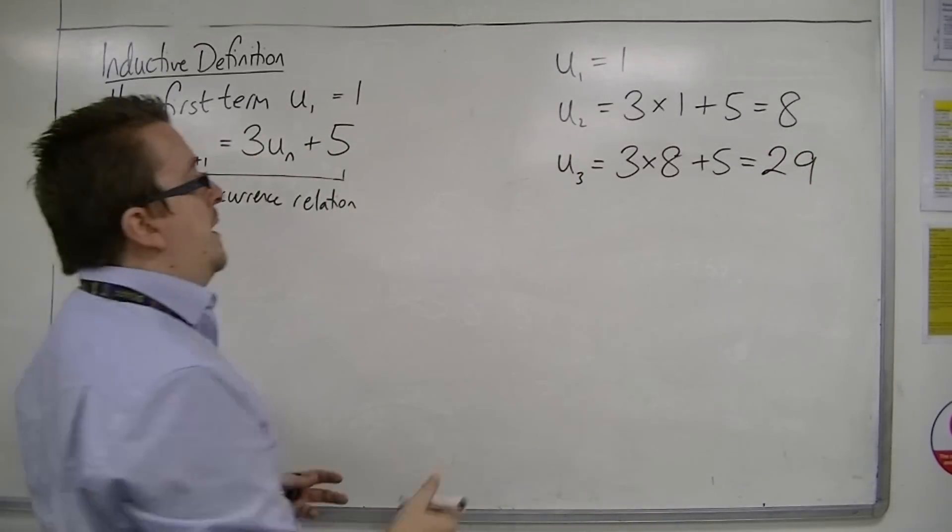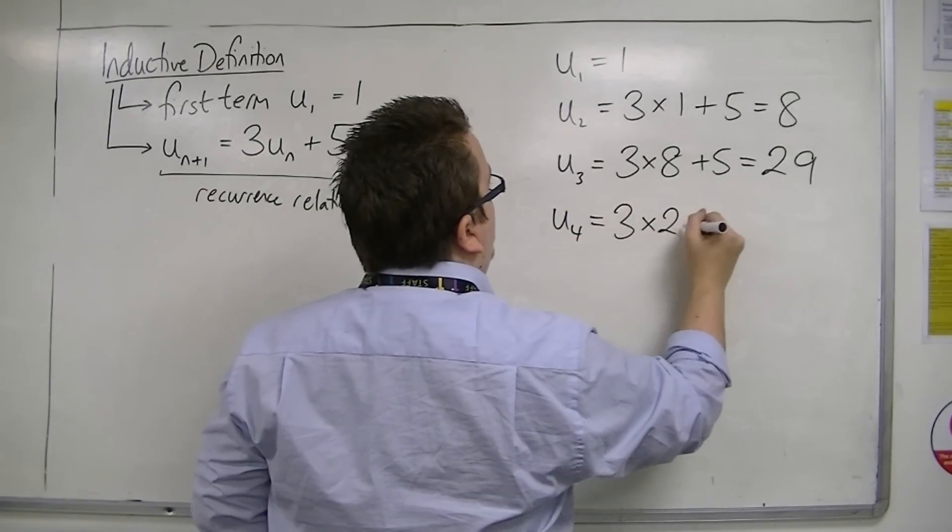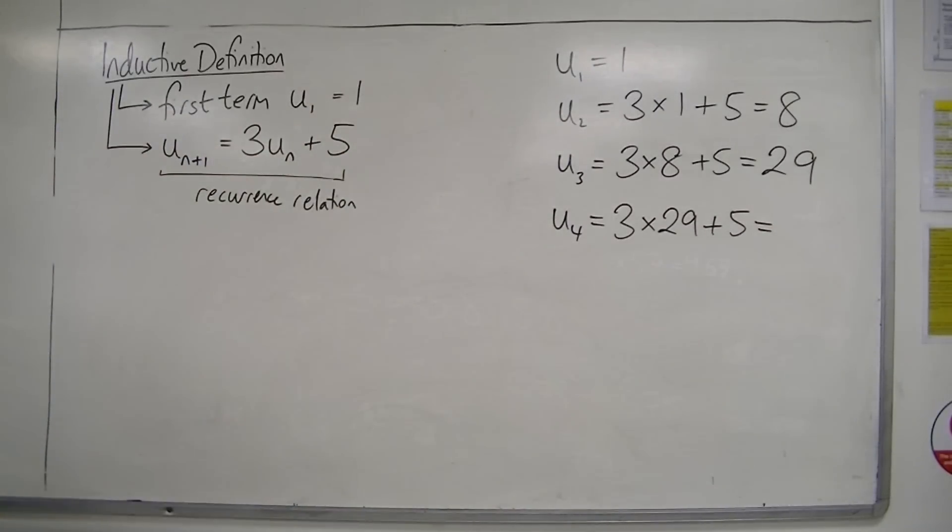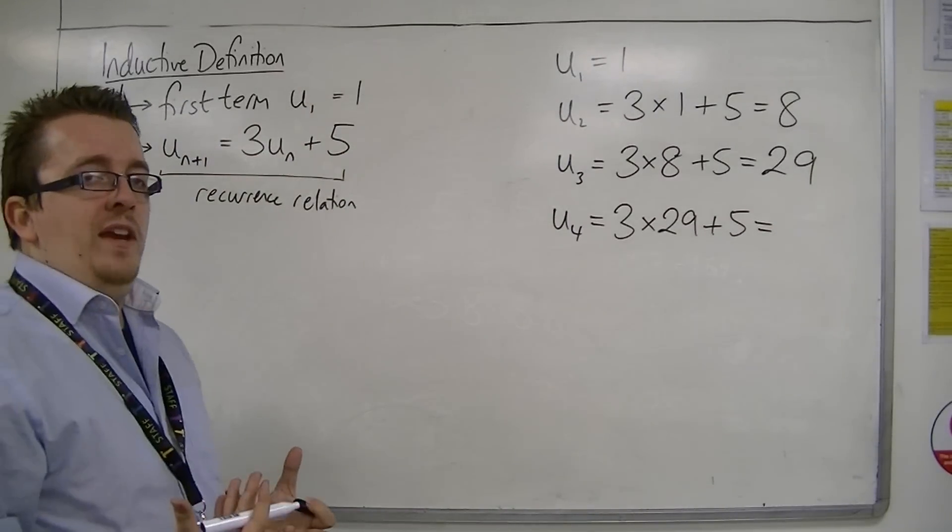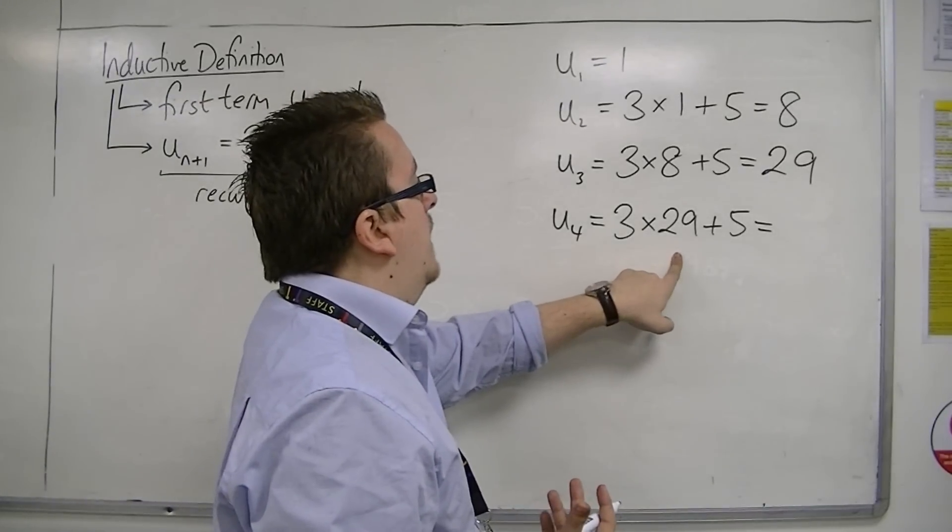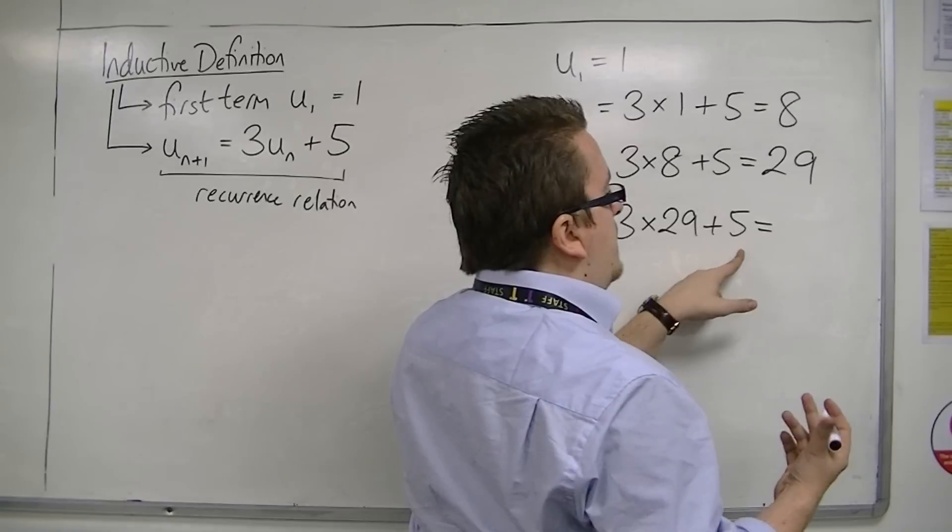And then you can keep going. You can say, well, U4 is 3 lots of 29 plus 5. So each of the terms uses the preceding term. So 3 lots of 29 is 87 plus 5 is 92.